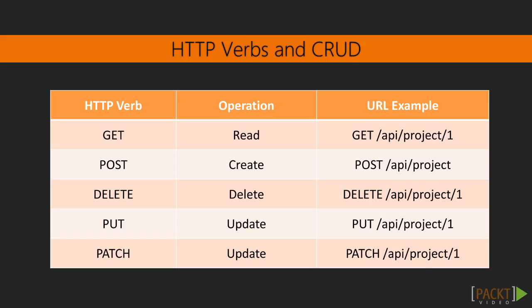HTTP verbs or methods can be mapped to CRUD operations. The GET method maps to the read operation, the POST method maps to the create operation. The DELETE method can be mapped to the delete operation and the PUT method can be mapped to the update operation. There are some guides which say that the PATCH HTTP verb is the actual one which should be used for update, but the PUT verb has a more in-depth meaning: if the item which was updated exists on the server side then it will update the data, otherwise it will try to save the data coming through the request.